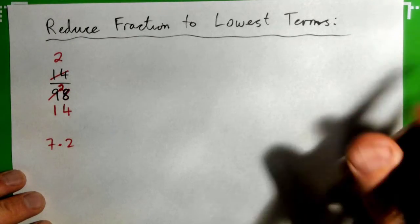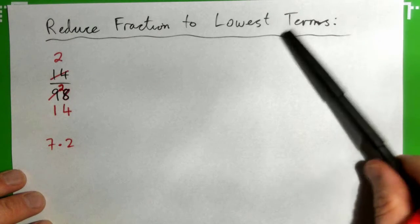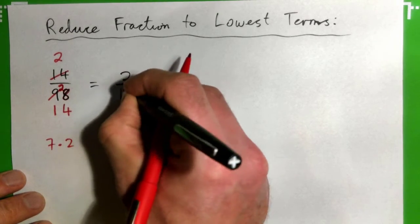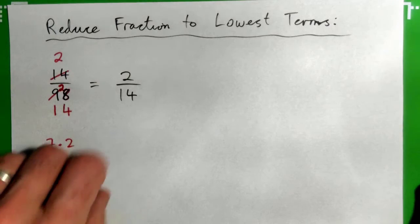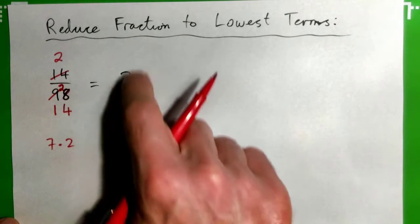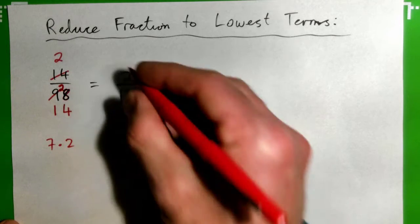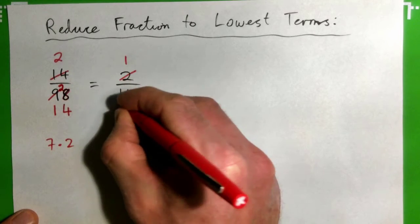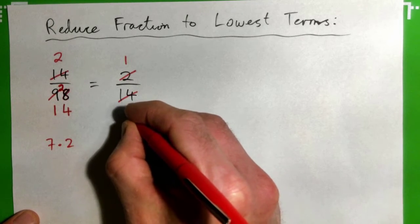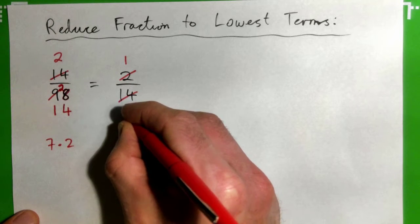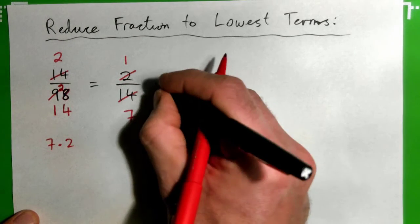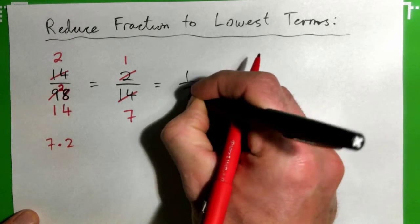Yes, that can be simplified even more because they're both even numbers. So what goes into the top and the bottom? Yes, 2 into 2 goes once, 2 into 14 goes 7. Perfect, and so this whole thing becomes 1 over 7.